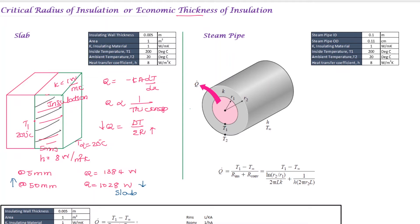For the pipe, the inside temperature is 200 degrees Celsius, the outside temperature is 20 degrees Celsius, the heat transfer coefficient is 8 Watt per meter squared Kelvin, and the thermal conductivity is 1 Watt per meter Kelvin. We substitute this as T1 minus T-infinity. The conduction resistance is ln(r2/r1) divided by 2πkL, and the convection resistance is 1 divided by h·2πr2·L.